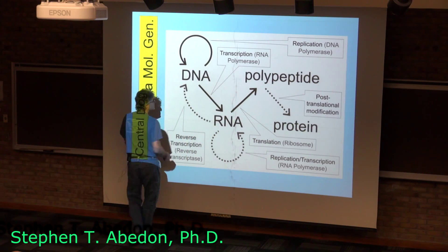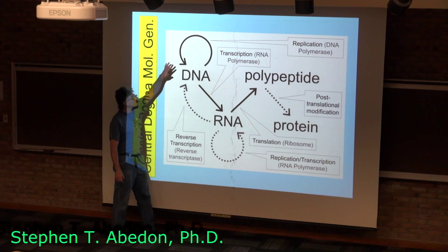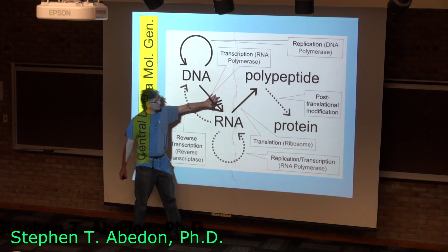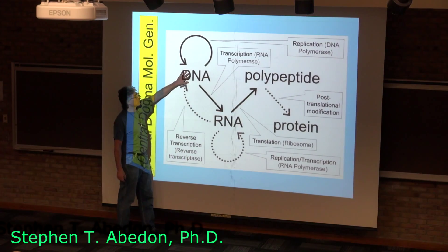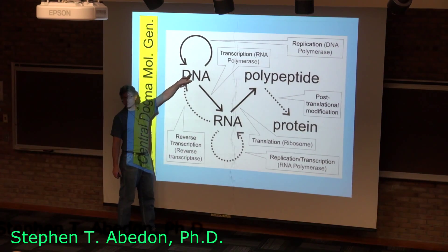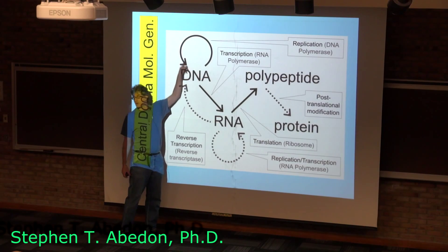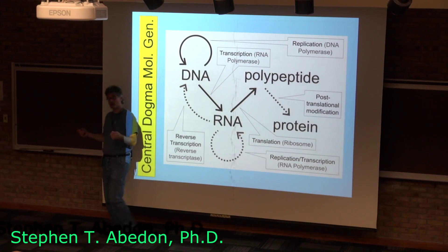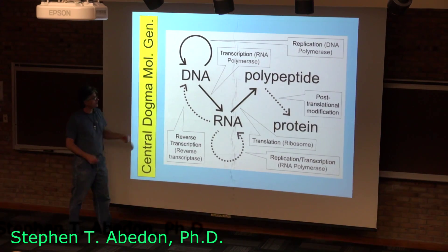The central dogma of molecular genetics is replication, transcription, and translation. Replication is taking DNA and making more DNA — taking a double helix and making two double helices out of it.